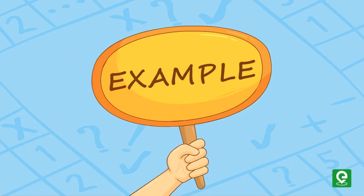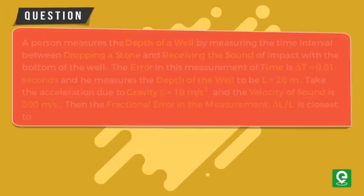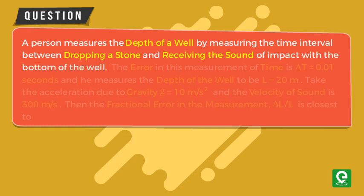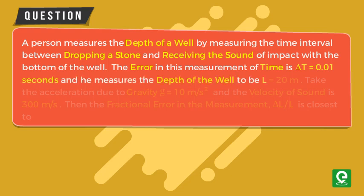Let's solve an example to find the fractional error. Question: A person measures the depth of a well by measuring the time interval between dropping a stone and receiving the sound of impact with the bottom of the well. The error in this measurement of time is ΔT equals 0.01 seconds.